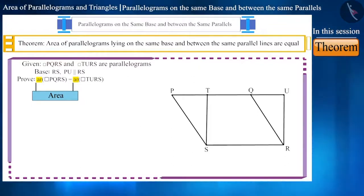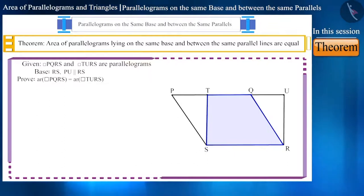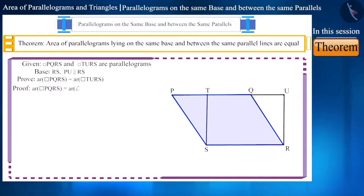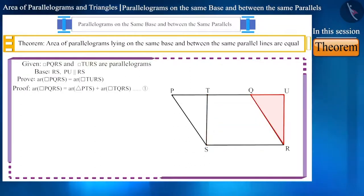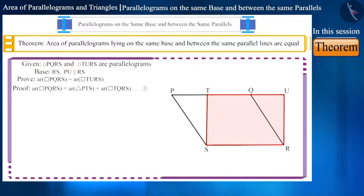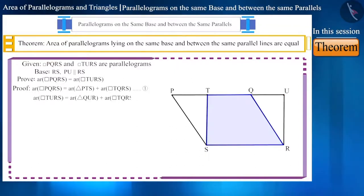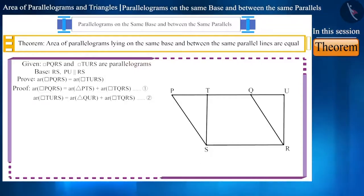Looking at the figure, parallelogram PQRS is made up of triangle PTS and quadrilateral TQRS combined together. That is, ar(PQRS) = ar(PTS) + ar(TQRS) — equation 1. Similarly, parallelogram TURS is made up of triangle QUR and quadrilateral TQRS combined together, so ar(TURS) = ar(QUR) + ar(TQRS) — equation 2. In equations 1 and 2, quadrilateral TQRS is a common quadrilateral.